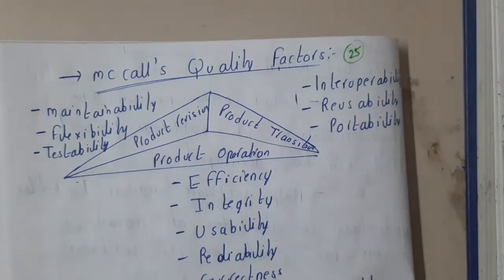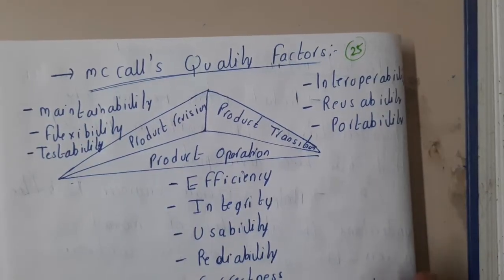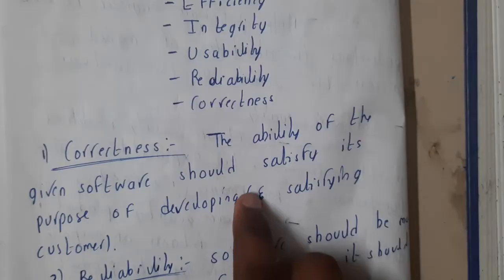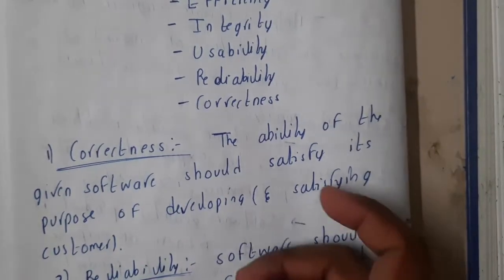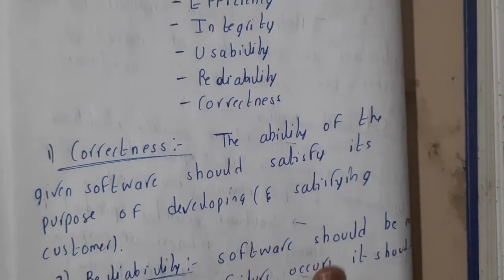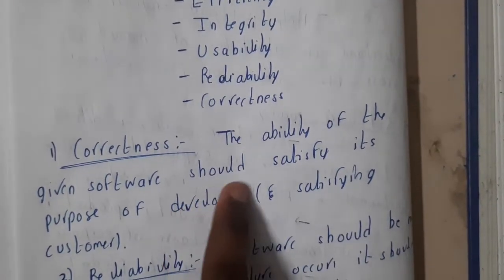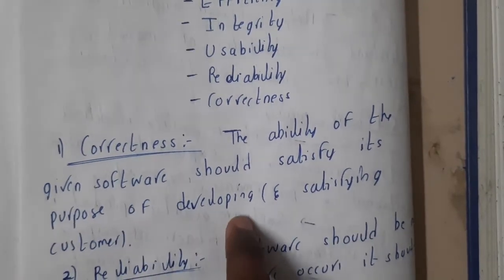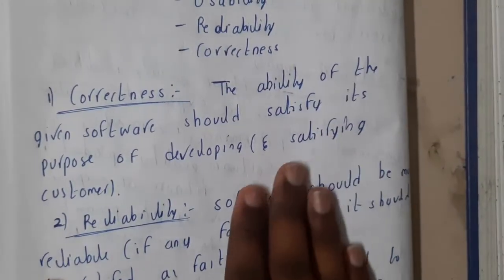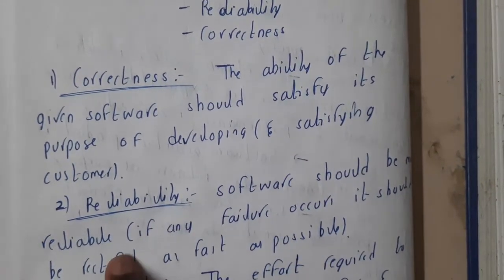We'll be discussing all these components, covering one or two points each so it will be clear for your examination. First, let us go through correctness. You will say that a software is correct when your customer's requirements are fulfilled. The ability of given software should satisfy its purpose of development — that is, it should satisfy the customer's or client's needs.